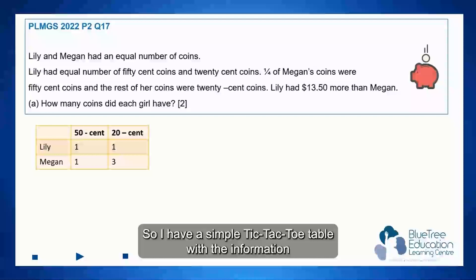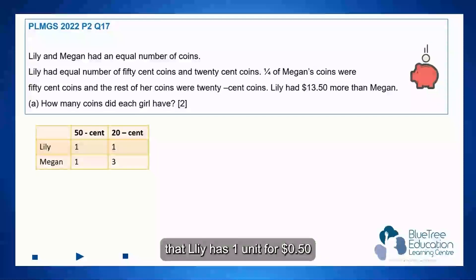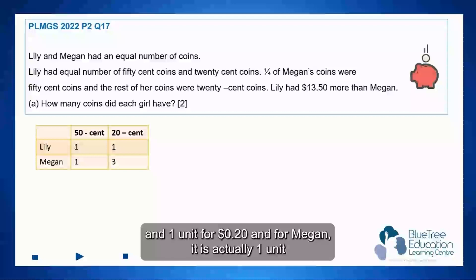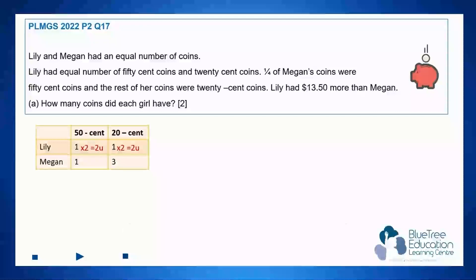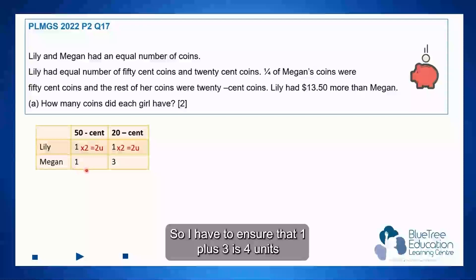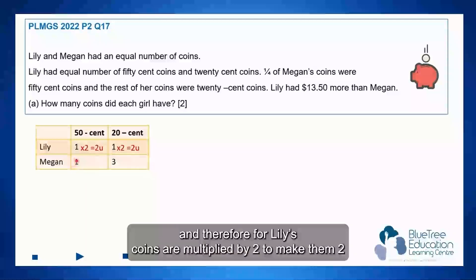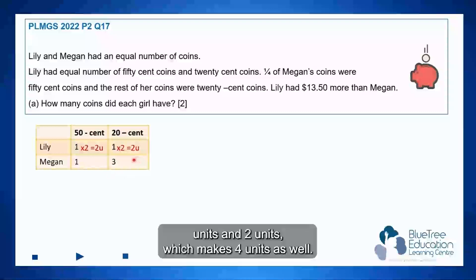I have a simple data table with the information that Lily has one unit for 50 cents and one unit for 20 cents. And for Megan, it is actually one unit to three units. Since they had an equal number of coins, I have to ensure that one plus three is four units, and therefore Lily's coins are multiplied by two to make them two units and two units, which makes four units as well.